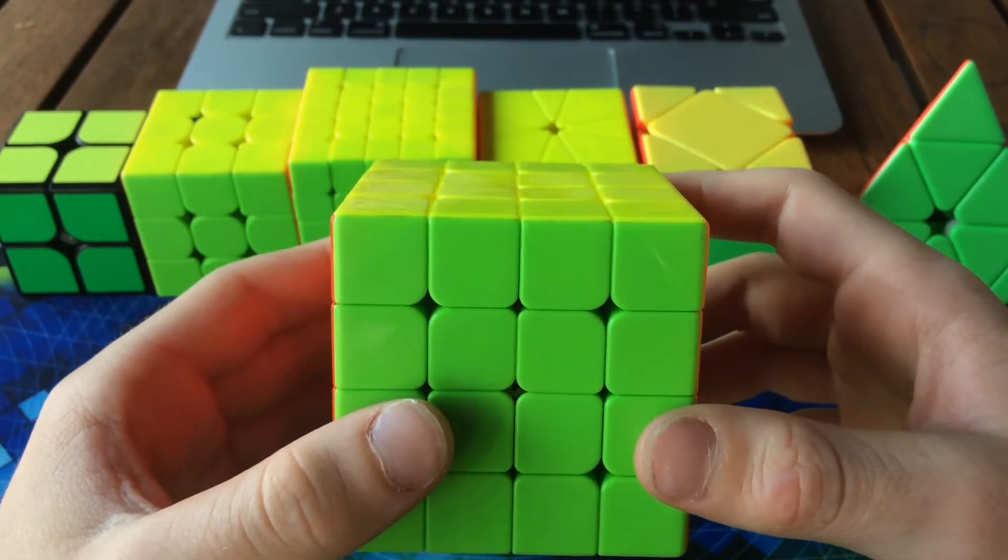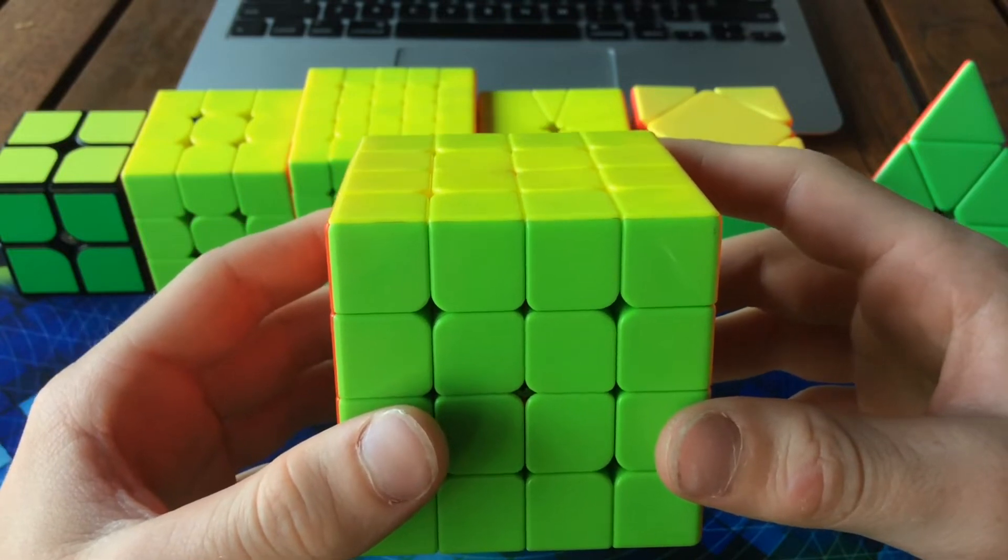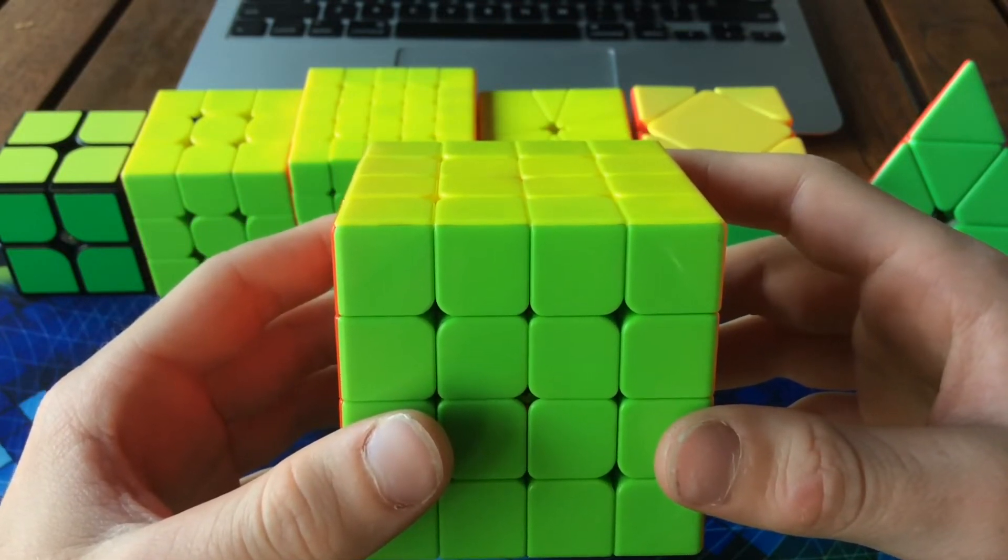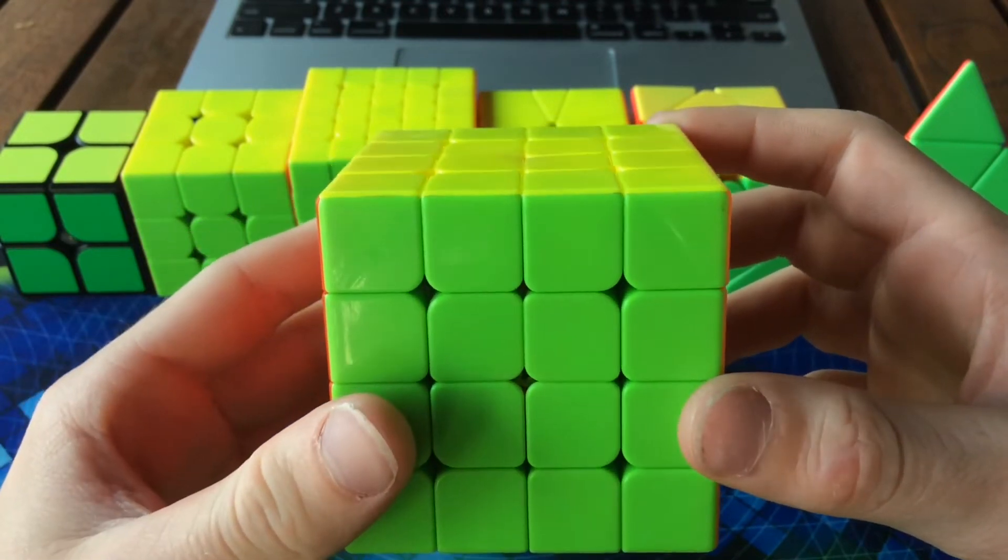For my goals, I got a 1:01 single last competition which I was aiming to get a sub one single, so that was really unlucky. My goal now is to get a sub one single and for average, just a sub 1:10 would be okay.